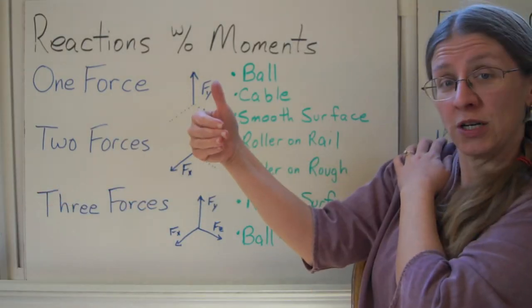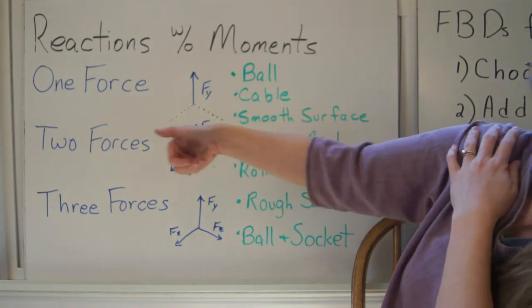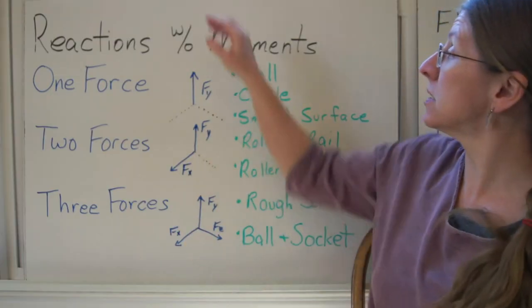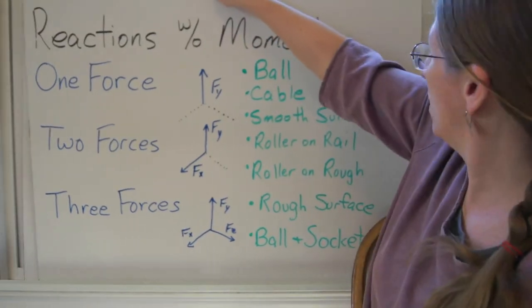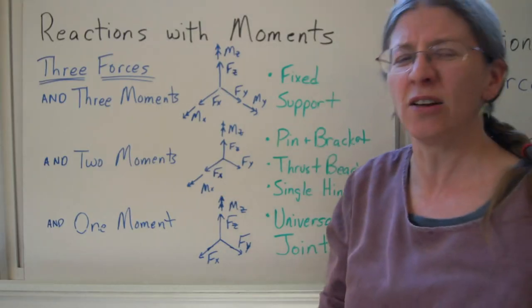Or you can twist it, which is a rotation along the length of your arm. All three of those rotations are allowed, so I get no reaction moments. You definitely don't want to translate your arm, though. It's called dislocating your shoulder. That hurts.